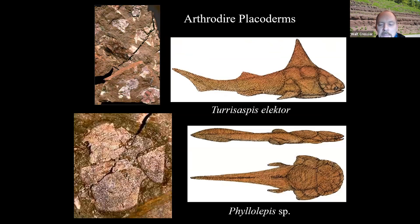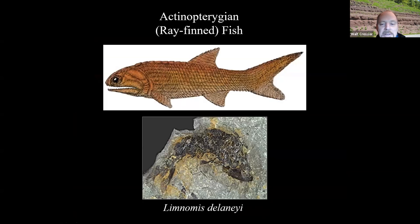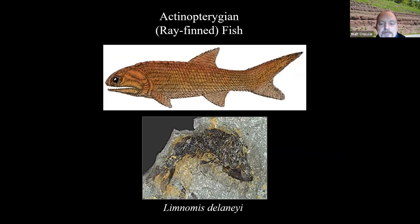A number of different Arthur Dyer placoderms are found, including species discovered at Red Hill. You see they've got this armor and fins with spikes, and you find very commonly Arthur Dyer plates in the red beds at Red Hill. Then this is what the jeweler found — Norm Delaney — Limnomus delaneyi, or Delaney's freshwater fish. This is an early bony fish with a heterocercal asymmetric tail, like gars and bowfins. The vertebrae go up into the upper lobe of the tail.